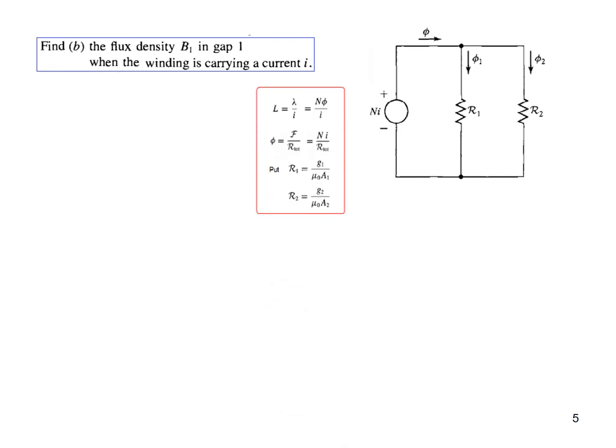These are the formulas again. Now phi_1 we have learned is N*i over R1, for this branch only. And then R1 is g over mu_naught*A1. And manipulating, this is the value we get.